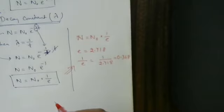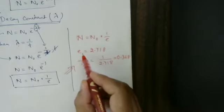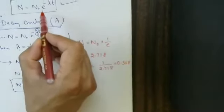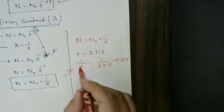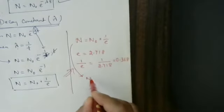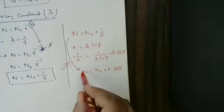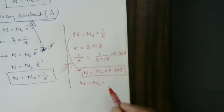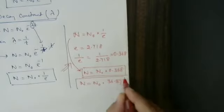1/e is equal to 1 divided by 2.718. Don't get confused — this e is the exponential value, not the electron charge. Electron charge e is 1.6 × 10⁻¹⁹ coulomb, but this e exponential value is 2.718. So 1/e equals 0.368. Therefore, N equals N₀ × 0.368, or we can write N equals N₀ × 36.8%.